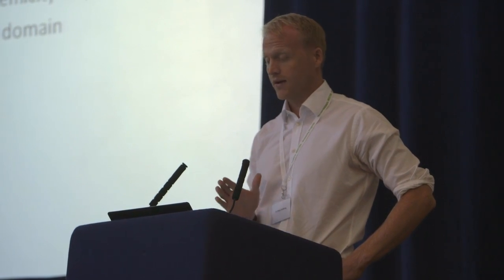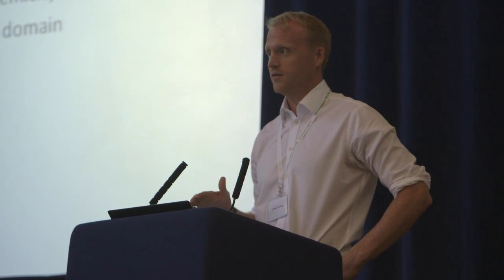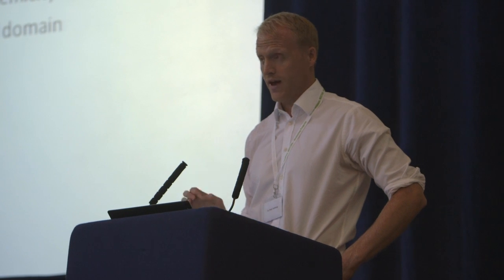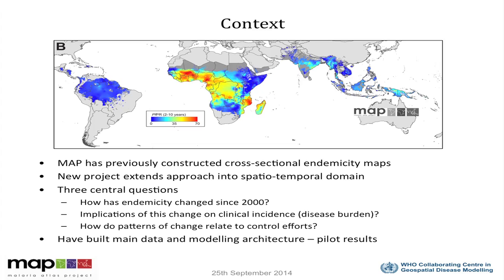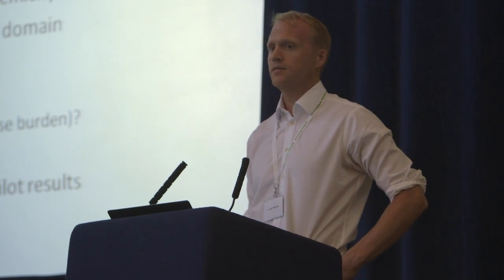This new project essentially aims to extend these approaches into the spatial-temporal domain — to go from static evaluations of risk to dynamic evaluations — with an initial focus on sub-Saharan Africa and PF. The project is geared up to answer three central questions: how has the pattern of endemicity changed since 2000, what have been the implications for clinical incidence and disease burden, and how do those changes relate to the heterogeneous background pattern of control efforts, with an initial emphasis on insecticide-treated bed nets.